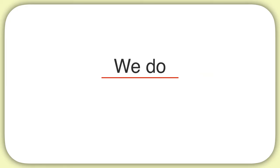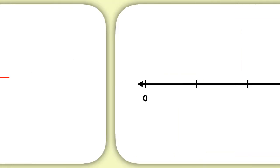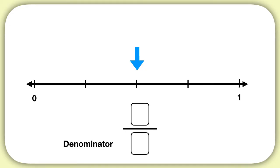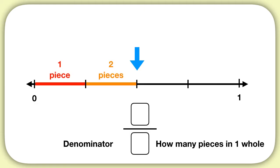Let's practice one of these together. Let's identify what this dash on the number line is. In our fraction, let's start with our denominator — the number on the bottom — which tells us how many pieces are in one whole. How many pieces are there between 0 and 1? On this number line, there are 1, 2, 3, 4 pieces between 0 and 1. So our denominator will be 4.